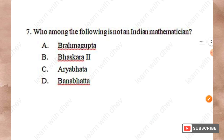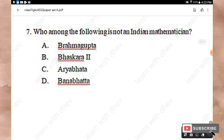Question 7: Who among the following is not an Indian mathematician? Option A: Brahmagupta. Option B: Bhaskara II. Option C: Aryabhata. Option D: Banabhatta. The right answer is Option D — Banabhatta.